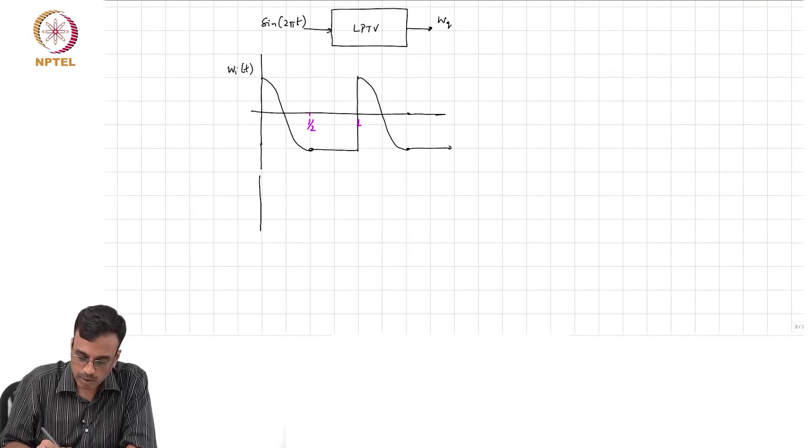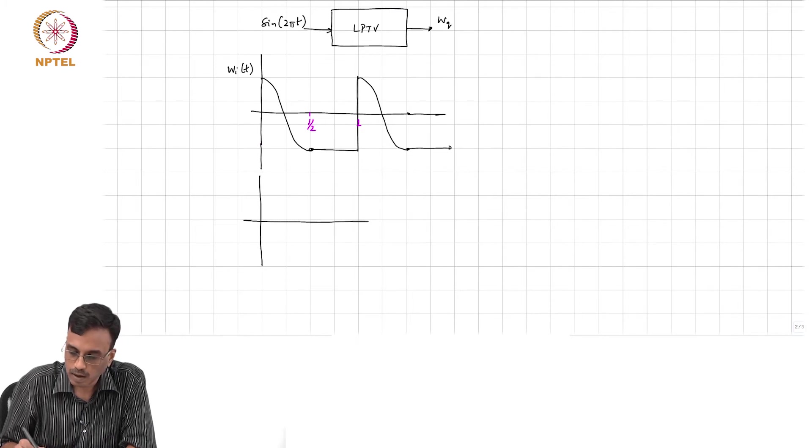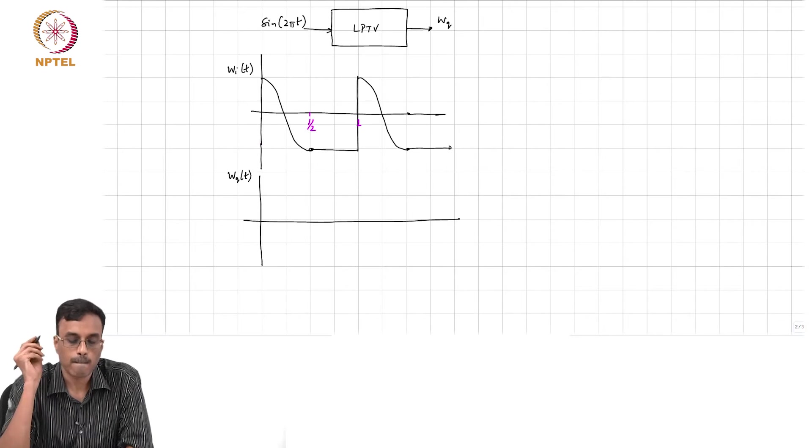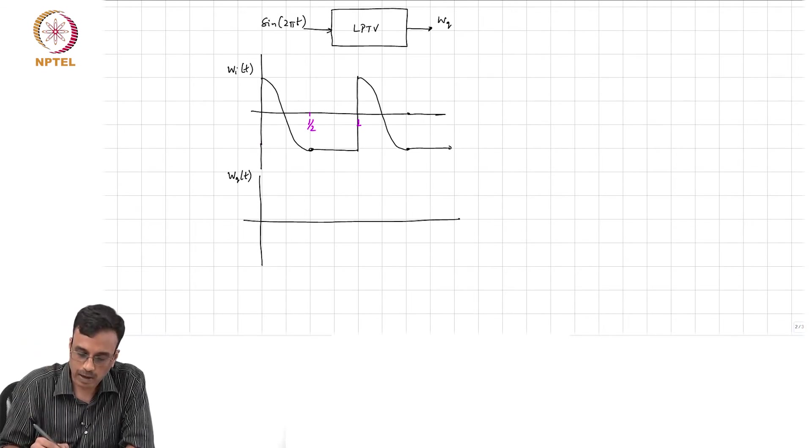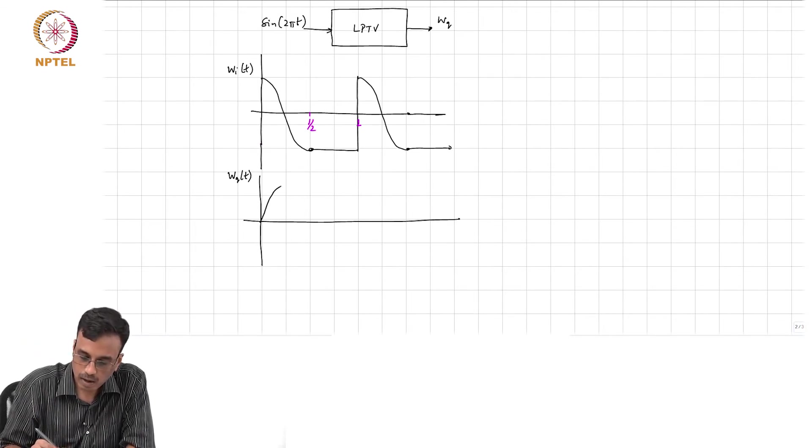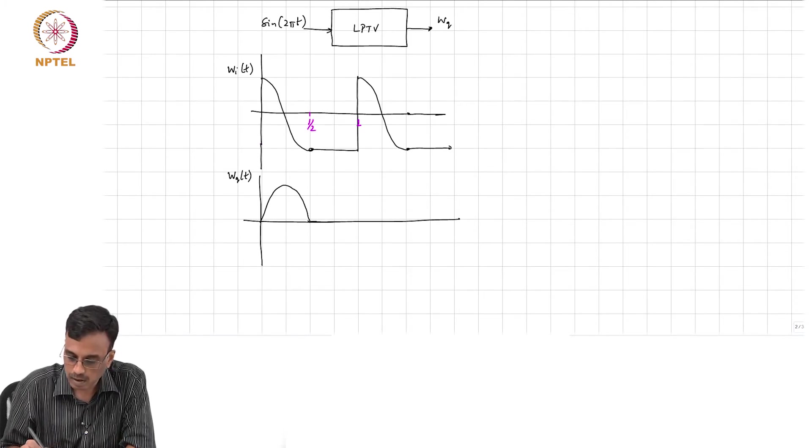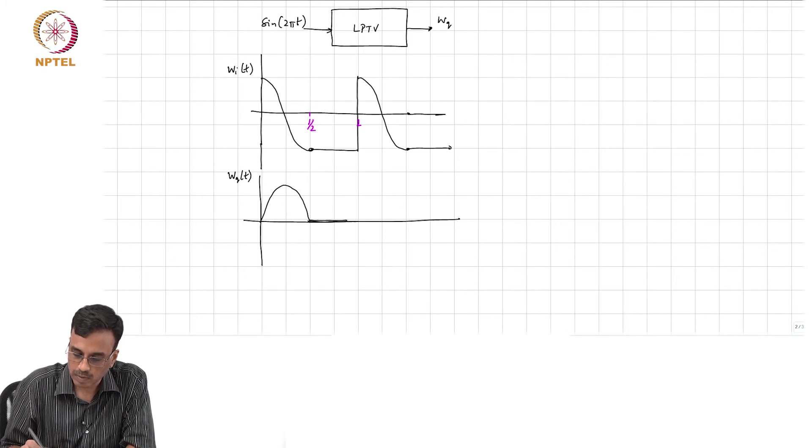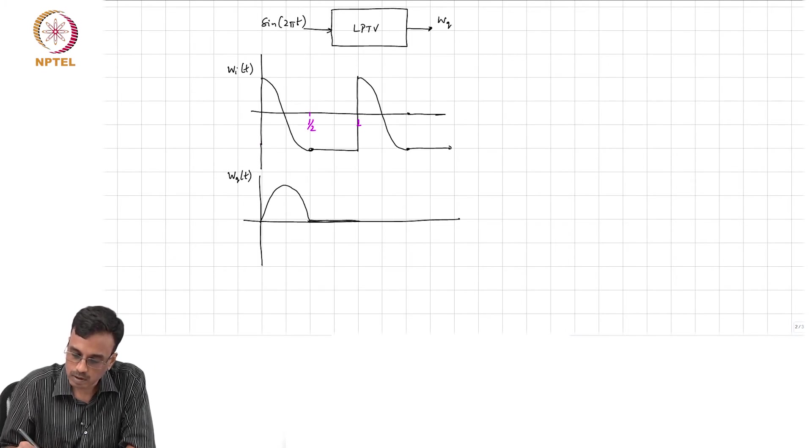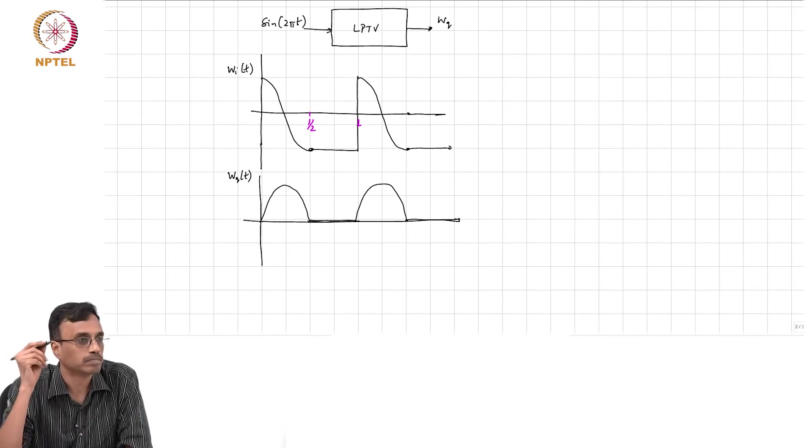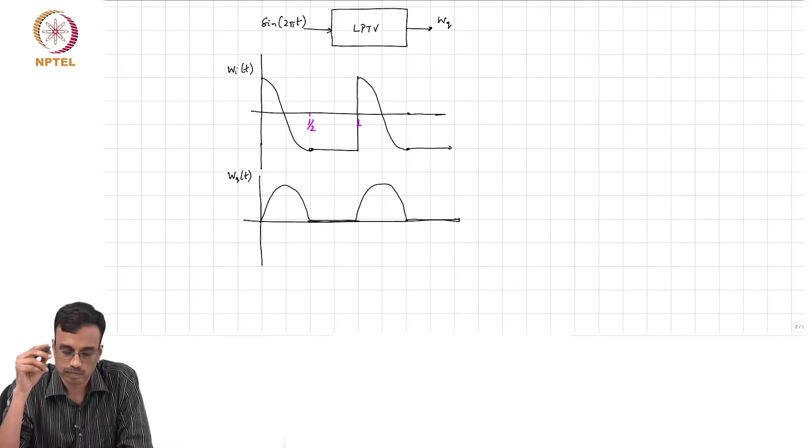And what comment can you make about wq of t? Multiply this by - this is sine - during half cycle becomes 0, sine becomes 0 and so on, correct.